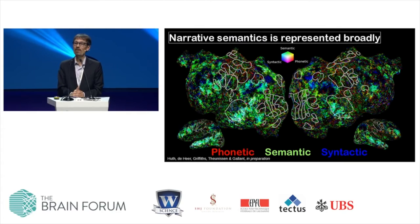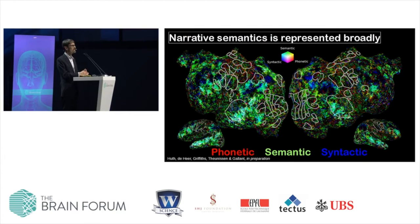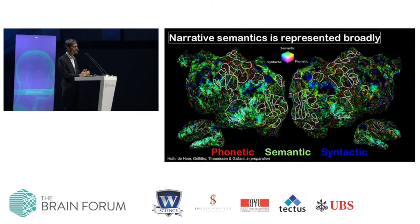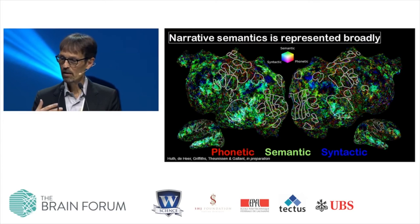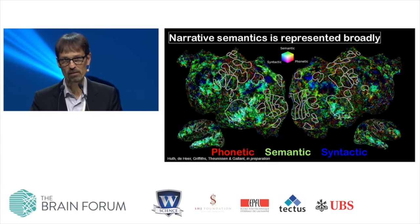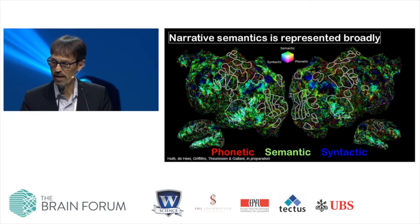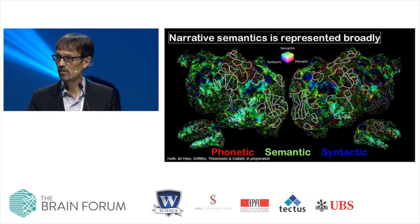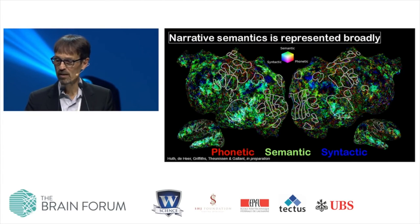This is data acquired from a natural language experiment. People in this experiment were asked to lie in the magnet listening to autobiographical narrative stories — very engaging stories. We can extract different kinds of information from the stories: for example, the phonetic information, the semantic, and the syntactic. We can calculate predictions of each voxel and draw the predictions on a flat map, showing which feature spaces predict activity in each voxel across the brain. There is some representation of phonetic, semantic, and syntactic information in the brain.